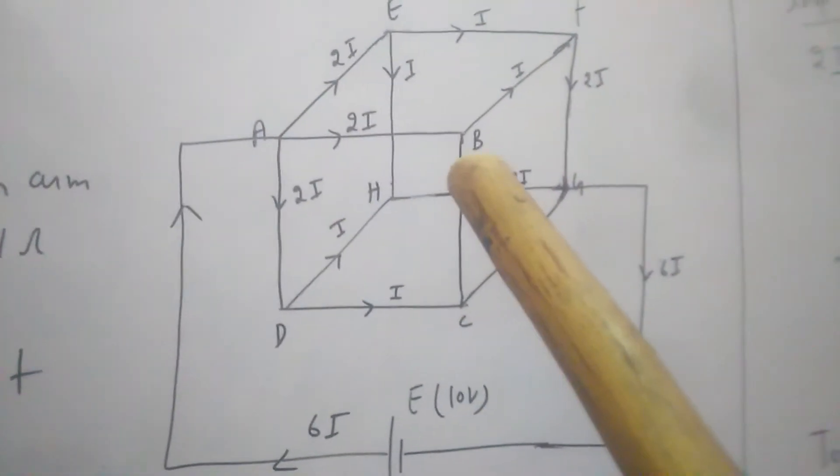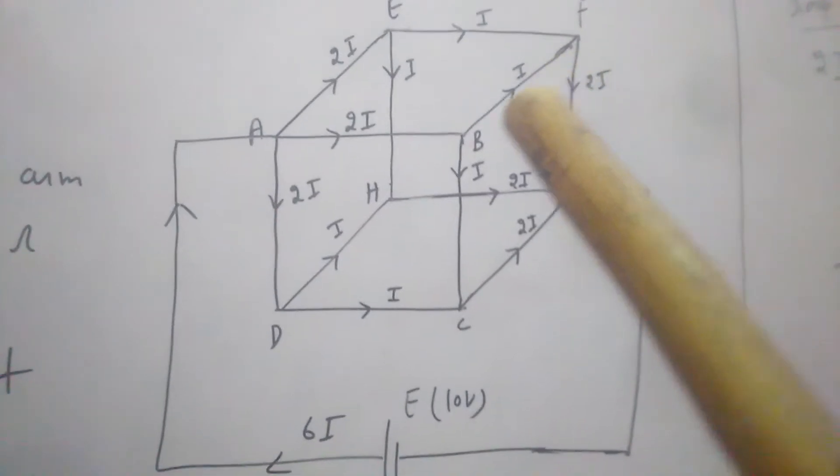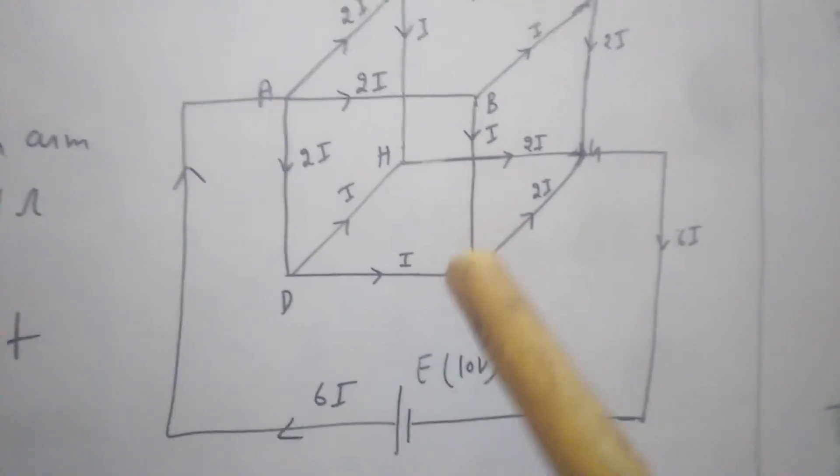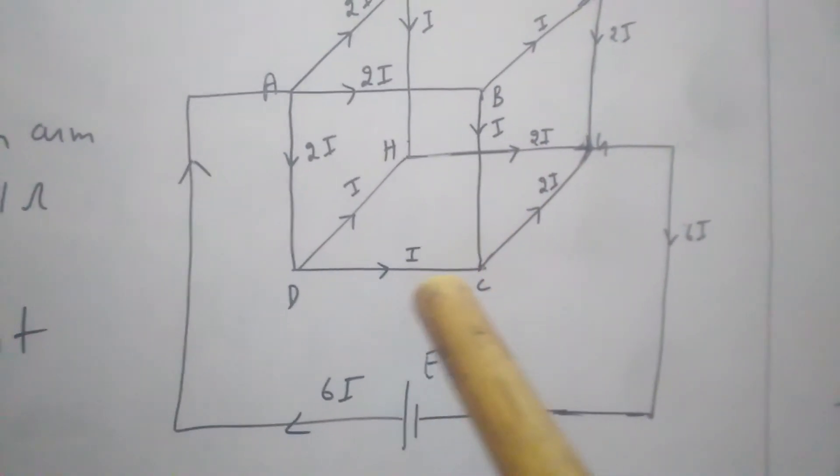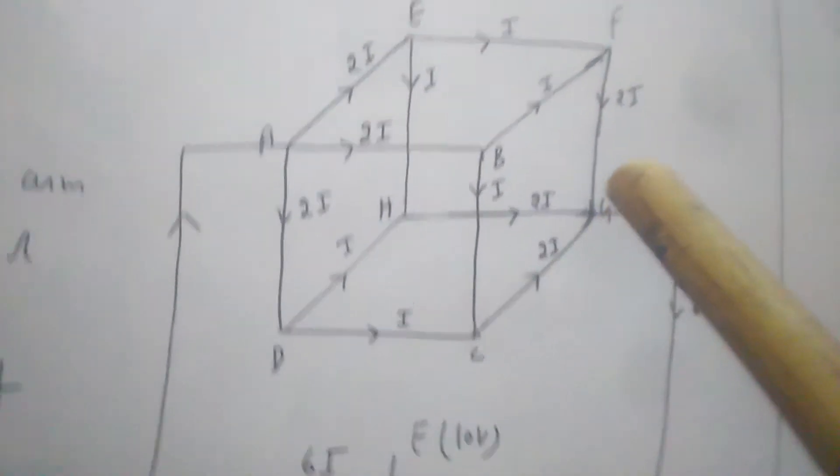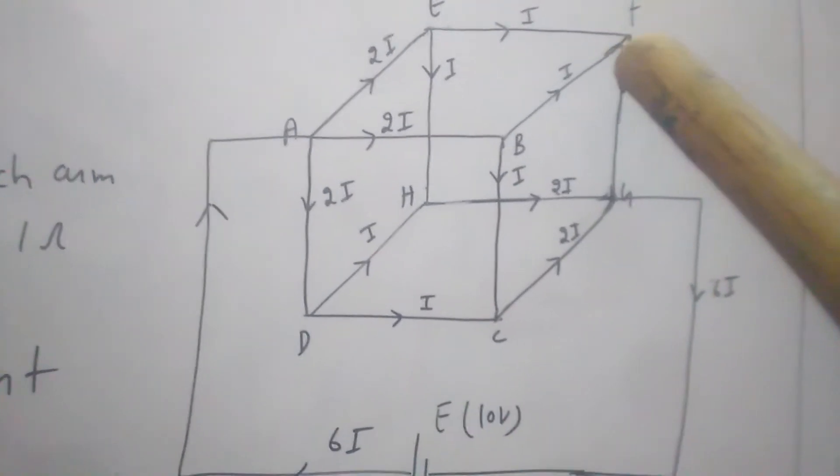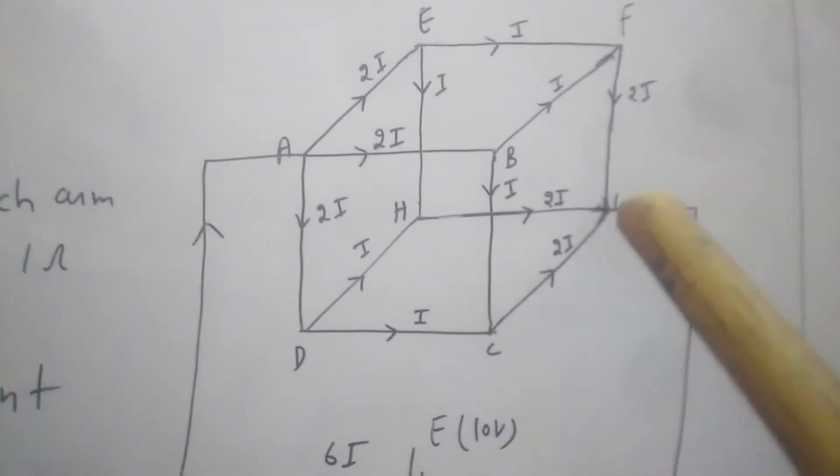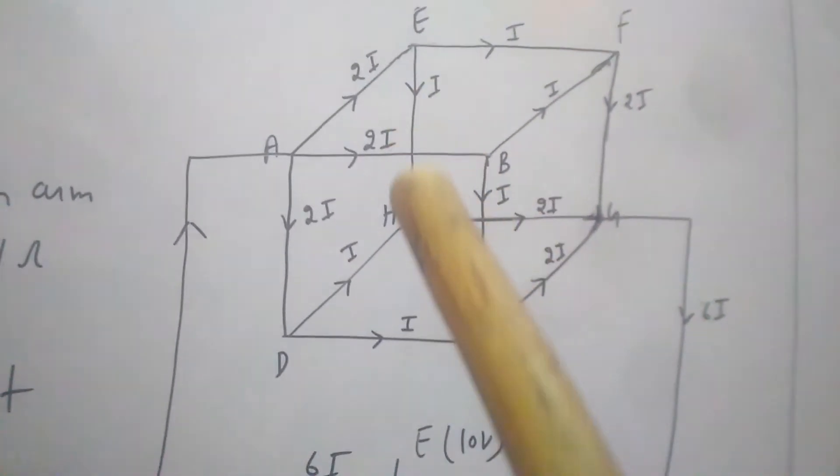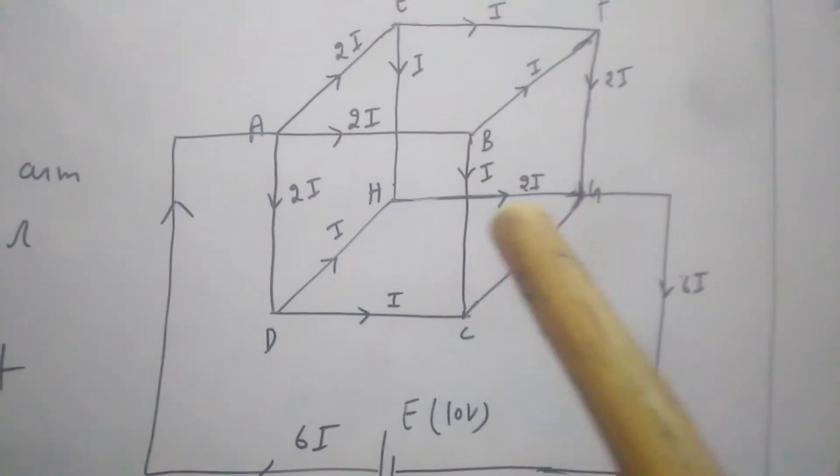Similarly at point B current is divided into two parts - i along BF and i along BC. Now at point C, i current coming from one side and i current from another will add up and 2i current will flow along CG. Similarly at point F the currents will add and 2i current will flow along FG. Similarly here i current from above and i current from this side will flow along HG.